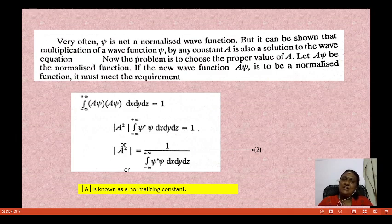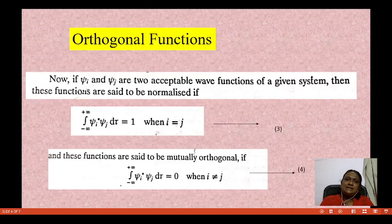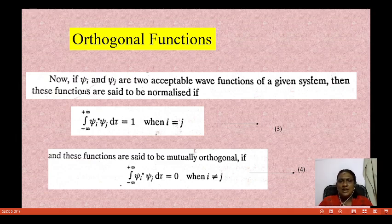The condition in which the integral of psi star times psi, dx dy dz at all angles equals 1 is satisfied — that is the normalized wave function. The condition that is satisfied is that of a normalized wave function. So that is known as the normalization wave function condition.